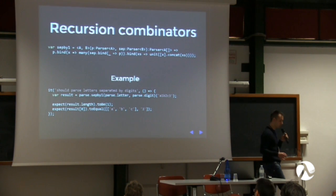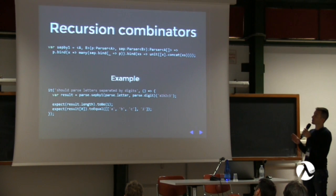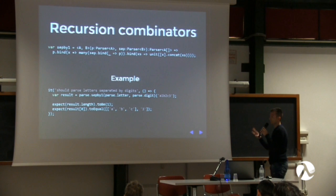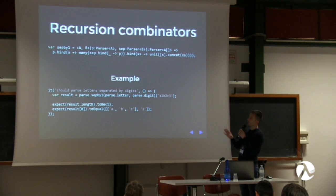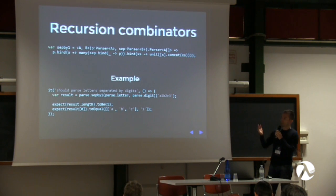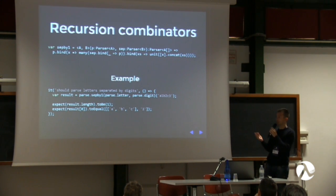Another combinator is sepBy1, which applies parser P multiple times separated by applications of parser sep. For example, parsing the string 'A1,B2,C3' using sepBy1 with a letter parser and a digit parser yields an array containing the letters — the digit separators are discarded and only the letters are kept.